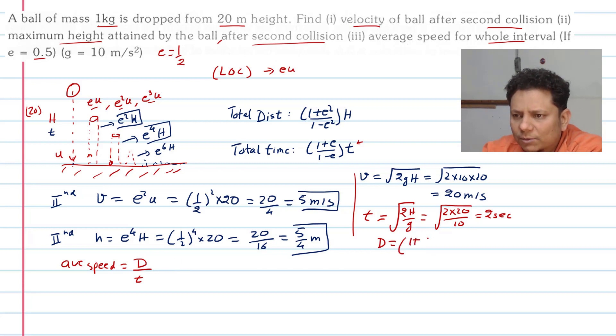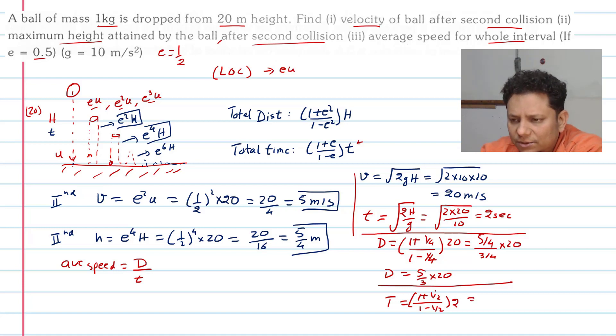Distance D will be equal to (1 + e²)/(1 - e²)·H, which is (1 + 1/4)/(1 - 1/4)×20. This is (5/4)/(3/4)×20, so D equals (5/3)×20. Total time taken t is (1 + e)/(1 - e)·t, which is (1 + 1/2)/(1 - 1/2)×2 = (3/2)/(1/2)×2 = 6 seconds.